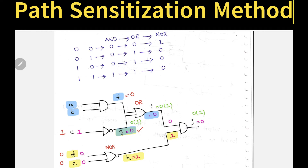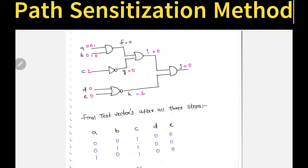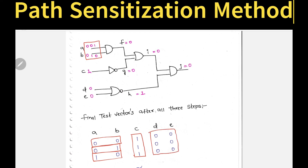Now using F equals 0, we predict A and B. For the AND gate with output 0, we get three combinations: A and B can be 0 0, 0 1, or 1 0. So we are getting three test vectors. C has only one value: 1. D and E are both 0. The three test vectors for inputs A, B, C, D, E are: (0, 0, 1, 0, 0), (0, 1, 1, 0, 0), and (1, 0, 1, 0, 0).